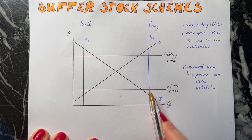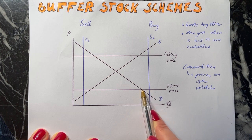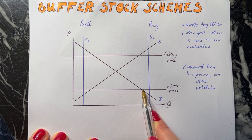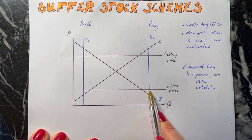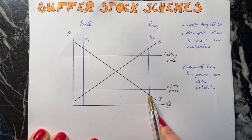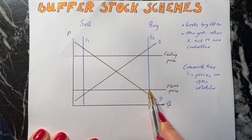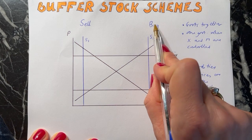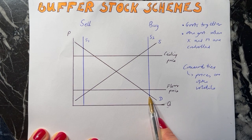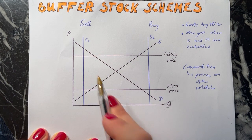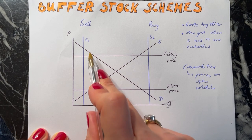Because at the closest acceptable price there was essentially excess supply, by buying from the market they increase demand and get rid of this excess supply. They buy from the market, causing the price to rise to the floor price, and therefore we are between the acceptable bands.